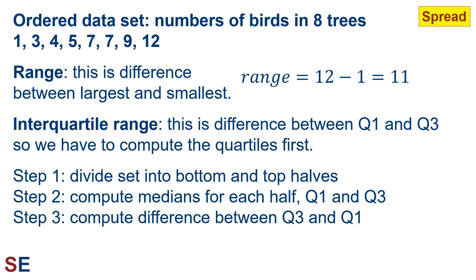Now for our spread statistics — and again we'll use our ordered dataset, because it makes a couple of these easy to calculate. First, our range: the range is the difference between the largest and the smallest, so in this case it's 12 minus 1 is 11. That tells us how far apart the minimum and maximum values are. Then the interquartile range, which is the difference between Q1 and Q3, the first quartile and the third quartile. We calculate it in three steps: divide the dataset into bottom and top halves, compute the medians for each half to get Q1 and Q3, then compute the difference between Q3 and Q1.